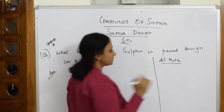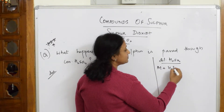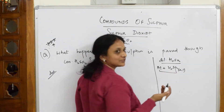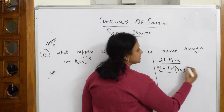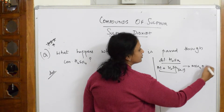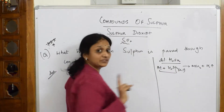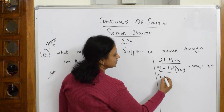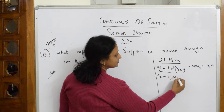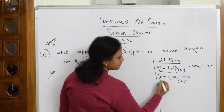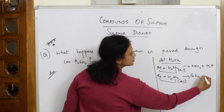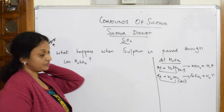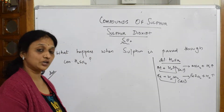When you take dilute sulphuric acid with a piece of metal, you get metal sulphate (the salt) plus hydrogen gas. For example, if you take iron and add dilute sulphuric acid, you get FeSO₄ (ferrous sulphate) plus hydrogen gas. This is a Grade 10 concept applicable only with dilute sulphuric acid.